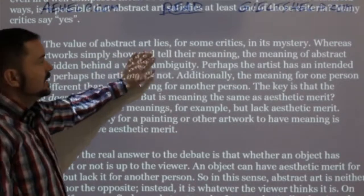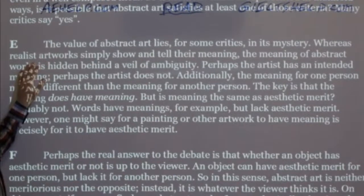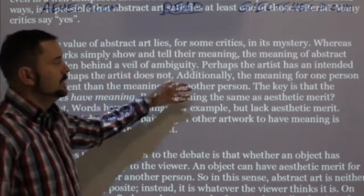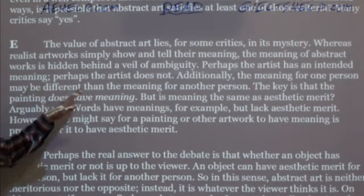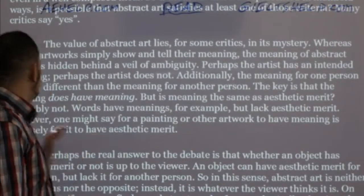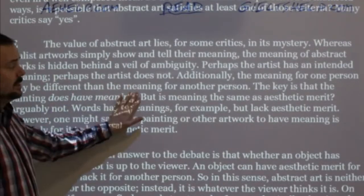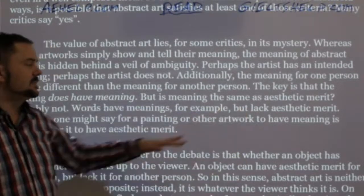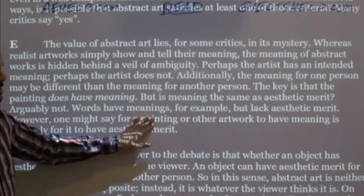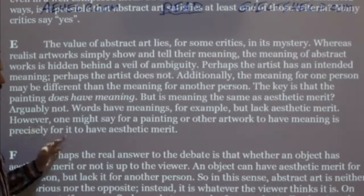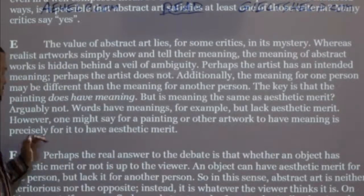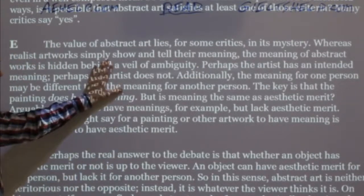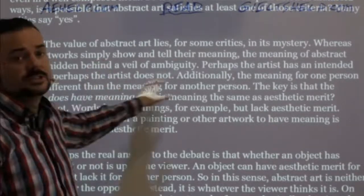The value of abstract art lies for some critics in its mystery. Whereas realist artworks simply show and tell their meaning, the meaning of abstract works is hidden behind a veil of ambiguity. Perhaps the artist has an intended meaning — perhaps not. Additionally, the meaning for one person may be different than for another. The key is that the painting does have meaning, but is meaning the same as aesthetic merit? Arguably not — words have meanings but lack aesthetic merit. However, for a painting to have meaning is precisely for it to have aesthetic merit. This paragraph is about the mystery of abstract art and how that mystery is part of its beauty or appeal.